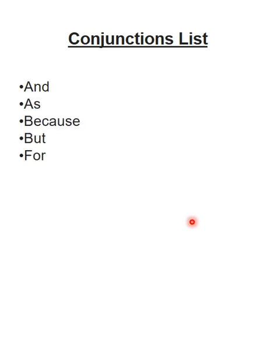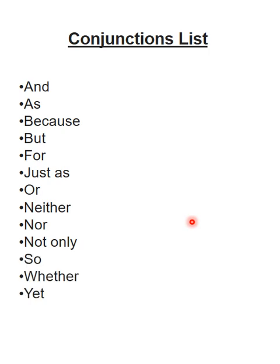Conjunctions کی پہلے ایک list لے لیتے ہیں کہ commonly used conjunctions کیا ہوتے ہیں، پھر ہم ان کو استعمال کر کے دیکھتے ہیں۔ Conjunctions یہ ہوتے ہیں: and, as, because, but, for, just as, or, neither, nor, not only, so, whether, yet۔ یہ الفاظ conjunctions کہلاتے ہیں۔ کچھ الفاظ آپ اس level پر شاید استعمال نہ کریں، مگر میں نے آپ کو ایک list دے دی ہے — conjunctions یہ ہوتے ہیں، اور ان کو دو words یا دو sentences کو جوڑنے کے لیے استعمال کیا جاتا ہے۔